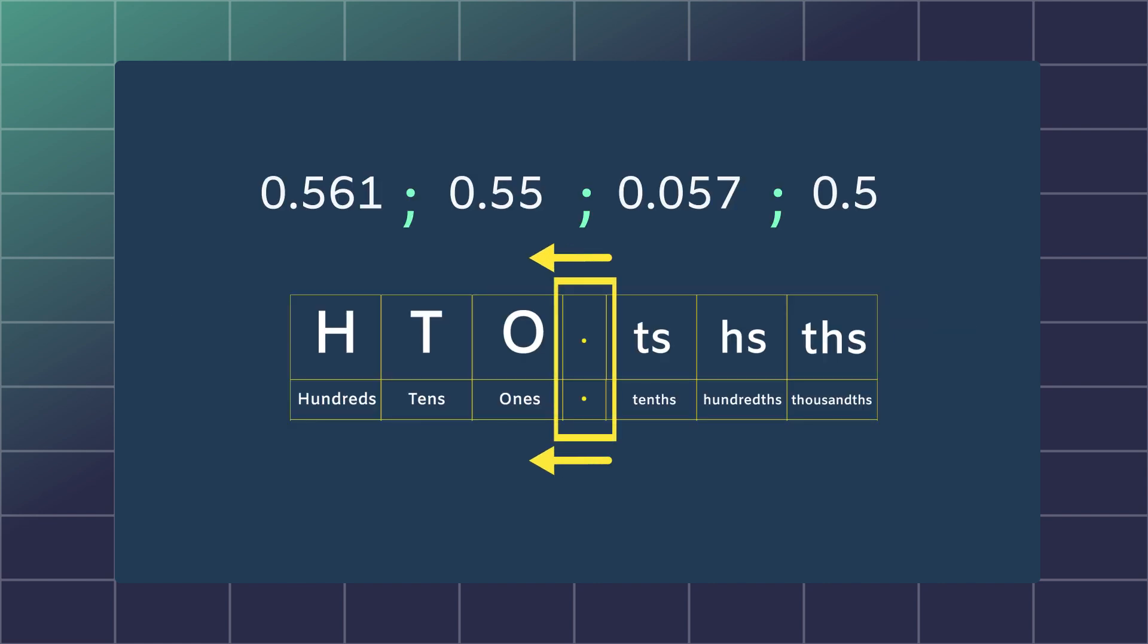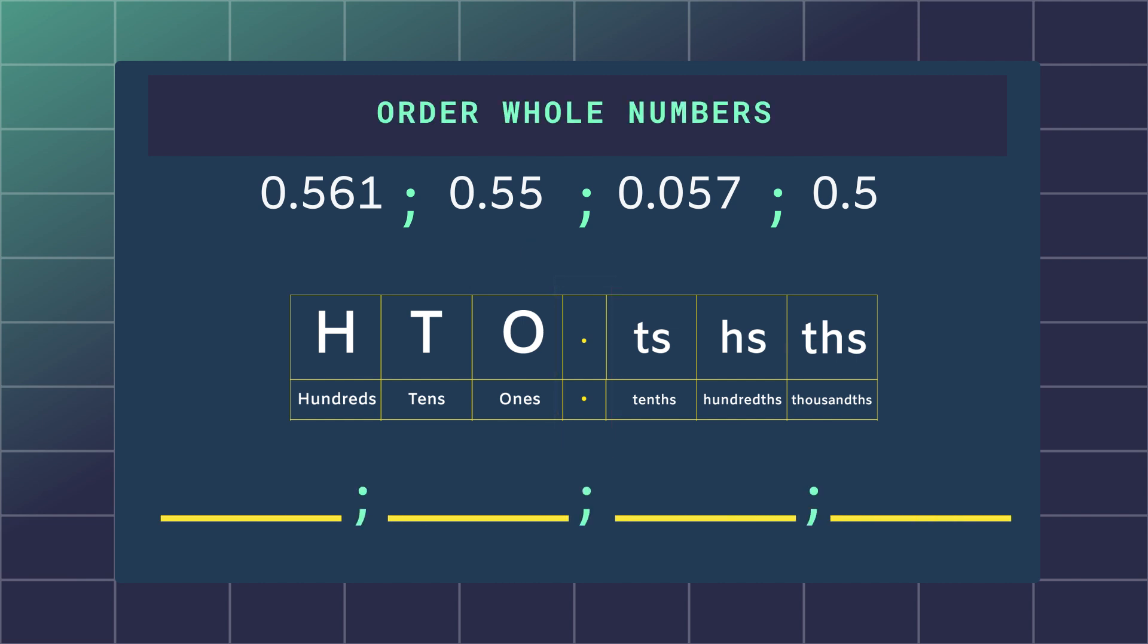A good place to start is to the left of the decimal point. This will be to order your whole numbers. In this example, there is a 0 in each one's place, making ordering the decimals easy.